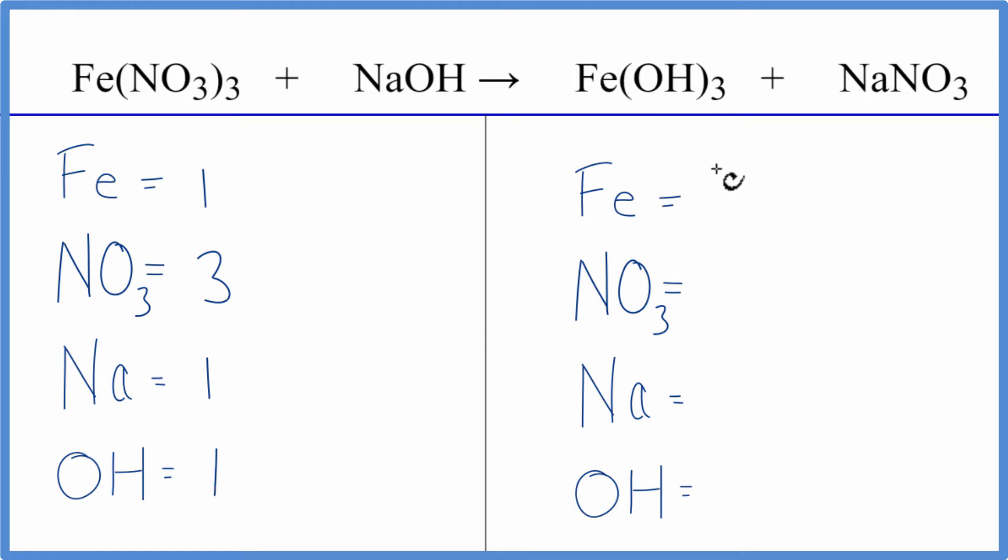On the product side, we have one iron, one nitrate, one sodium atom, and then the one hydroxide times three. So that makes everything a lot neater, easier to add up.